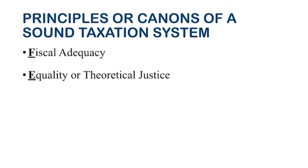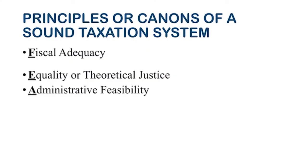The second principle is equality or theoretical justice: taxation power should not be exercised abusively and should be based on equality. The taxpayer should pay based on their ability to pay — hence the ability-to-pay principle. The third principle is administrative feasibility: the exercise of taxation power should be feasible to implement and monitor. For example, the Bureau of Internal Revenue has implemented the electronic filing and payment system to provide taxpayers a more convenient way of filing and paying taxes.